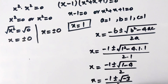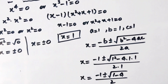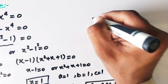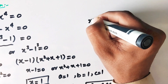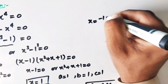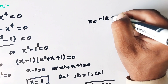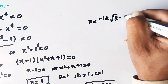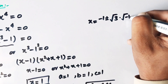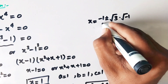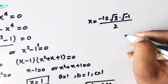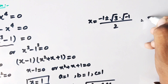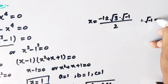So x equals minus 1 plus or minus the square root of minus 3, over 2. This can be written as x equals minus 1 plus or minus the square root of 3 times the square root of minus 1, all divided by 2.